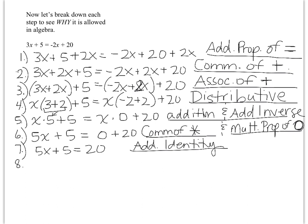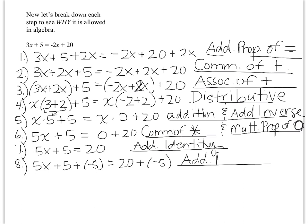Step eight: 5x plus 5 plus negative 5 equals 20 plus negative 5. What I did there is I added negative 5 to both sides. When you solved this, you subtracted 5 from both sides. Here I'm saying I added negative 5 — and because I added negative 5 to both sides, that is the addition property of equality. If I had subtracted 5 from both sides, that would be the subtraction property of equality.